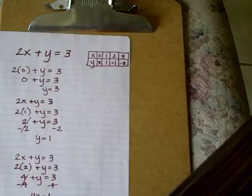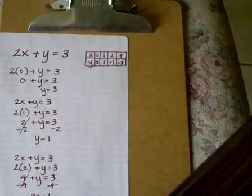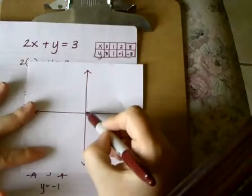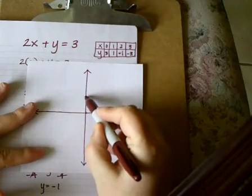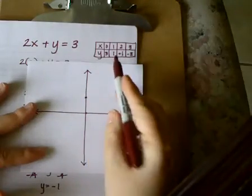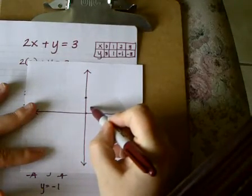And now I'm going to graph it. Again, we always start graphing at 0, 0. So from 0, 0, I'm going to go over 0 and up 3. 1, 2, 3. Put a dot. My next point is 1, 1. Over 1, up 1.